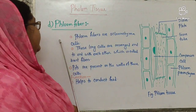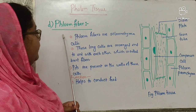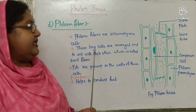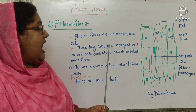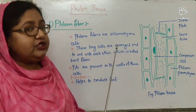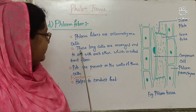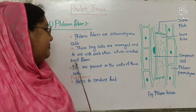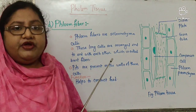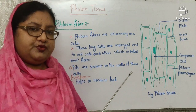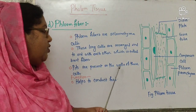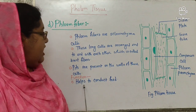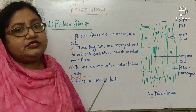Now, the fourth type of cell in phloem tissue is phloem fiber. Phloem fibers are sclerenchyma cells. These cells are long and arranged end to end, forming a structure called bast fiber — jute fiber is one kind of bast fiber. Pits are present on the walls of these cells. The function of phloem fiber: it helps to conduct food.